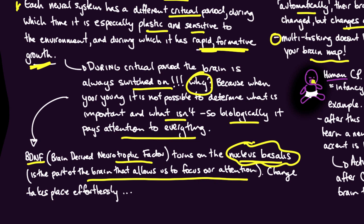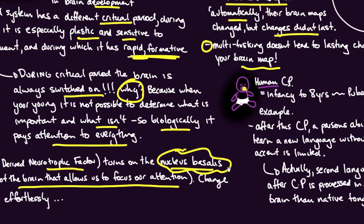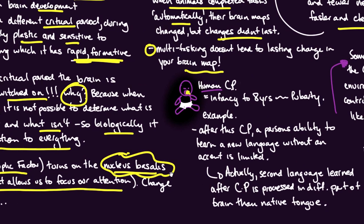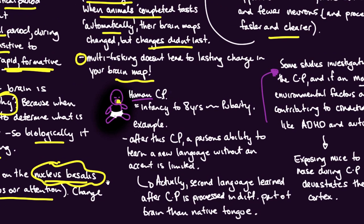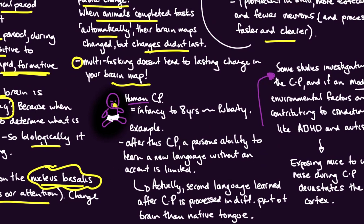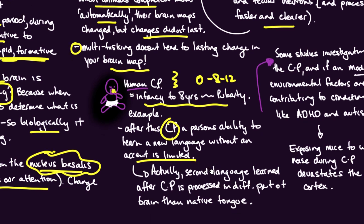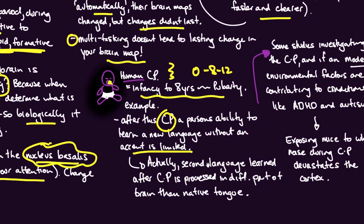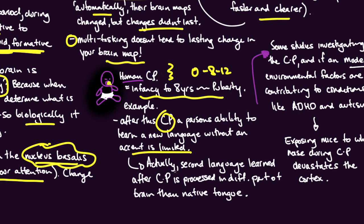Change takes place effortlessly because this thing's switched on all the time. There's some discussion in the book about attempts to try and get this to switch on in adulthood so that we can learn things at a much faster clip. I would hope that to happen because I would sign up for any study that would allow me to learn things much quicker. Looking at the human critical period - they suggest it's from 0 to 8 to 12 until puberty.